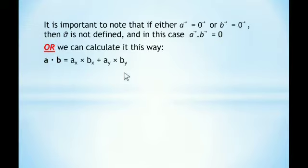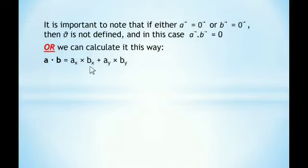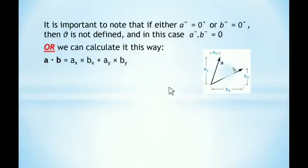We can also calculate the dot product like this: a·b = ax·bx + ay·by. That is, we will multiply the x components and the y components separately and then add. This is another way of writing the dot product.